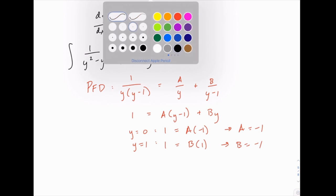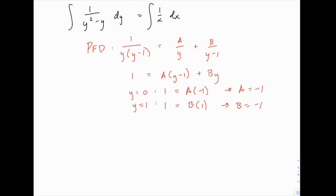So again a fairly straightforward partial fraction problem. That means on the left side this integral can be rewritten as negative 1 over y plus 1 over (y minus 1), and we still have 1 over x on the right side, which means we can now integrate both sides.